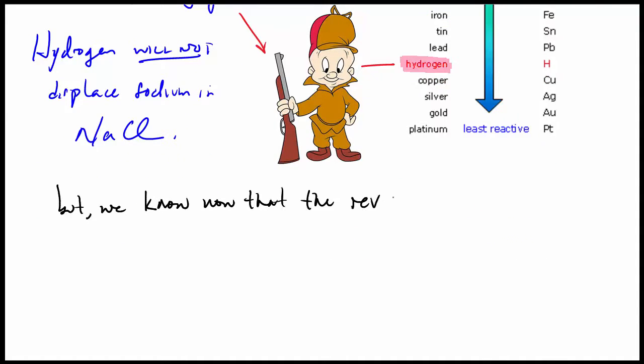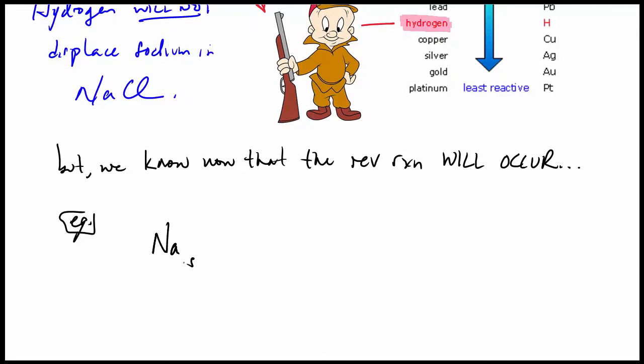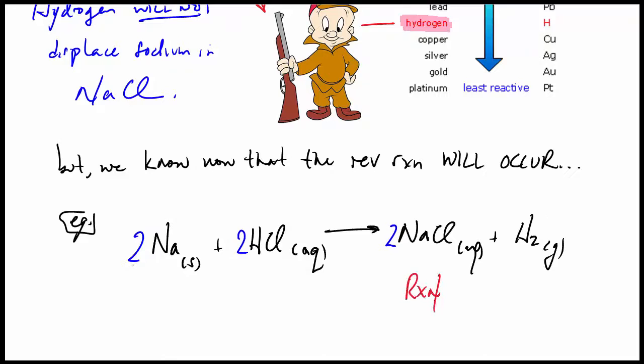But, you know, we know now that the reverse reaction will occur. So have a look. We know that if you put solid sodium and hydrochloric acid together, you do actually get aqueous sodium chloride and hydrogen gas. Make sure we balance the reaction, and you see, this one really will occur.